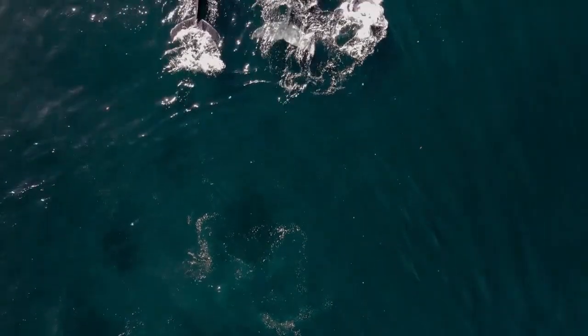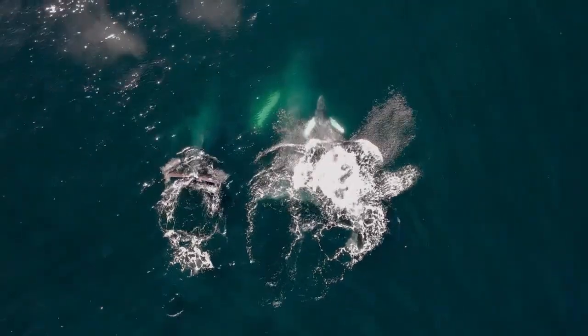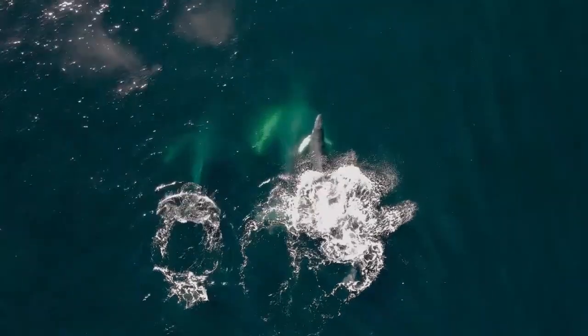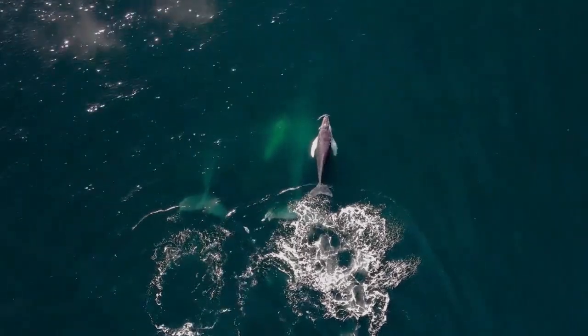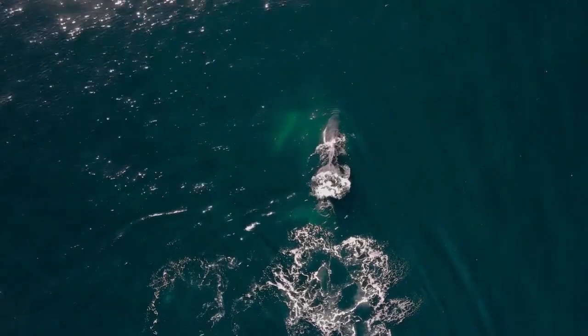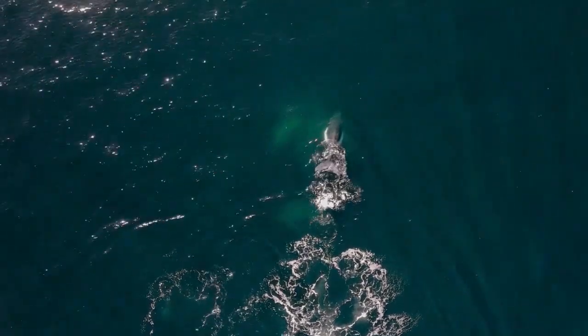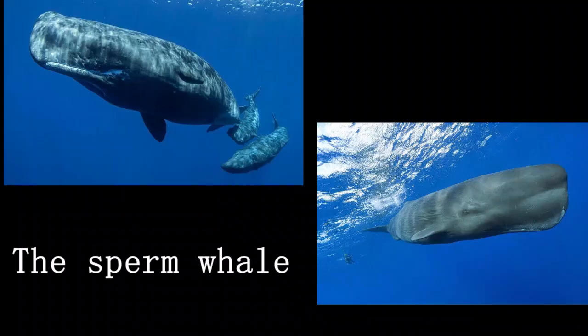At a depth of 3,000 meters, we enter the deep sea zone where the water temperature is only one to two degrees Celsius, devoid of any light, and the water pressure exceeds 300 atmospheres. Fish are rarely seen at this depth, however there is a supersized fish that can dive here — the sperm whale.